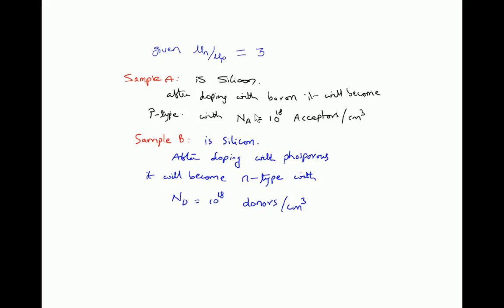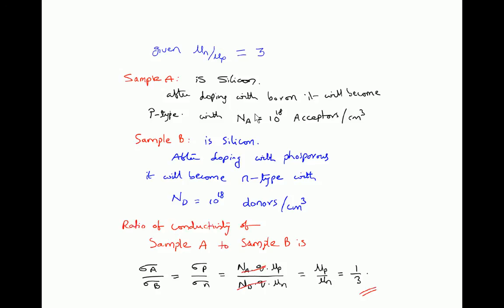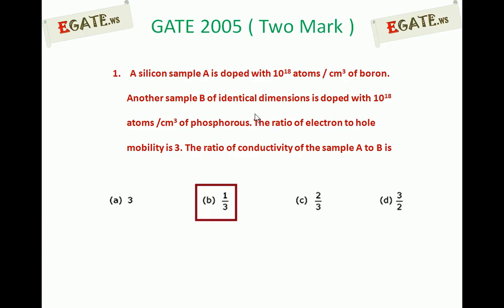Now we need to calculate conductivity of sample A to sample B. Ratio of conductivity of sample A to sample B is σA/σB, that is σP/σn because sample A is turning towards p-type, sample B turning towards n-type. So σP/σn is approximately equal to NA·Q·μp divided by ND·Q·μn. Because whenever we are neglecting the minority carriers these equations will result for the conductivity. So NA and ND are the same 10^18 atoms per cm³. Charge Q is same. And here the conductivity is directly proportional to μp/μn. So μp/μn is nothing but 1/3 since μn/μp is given as 3. So correct answer for the given question is 1/3.